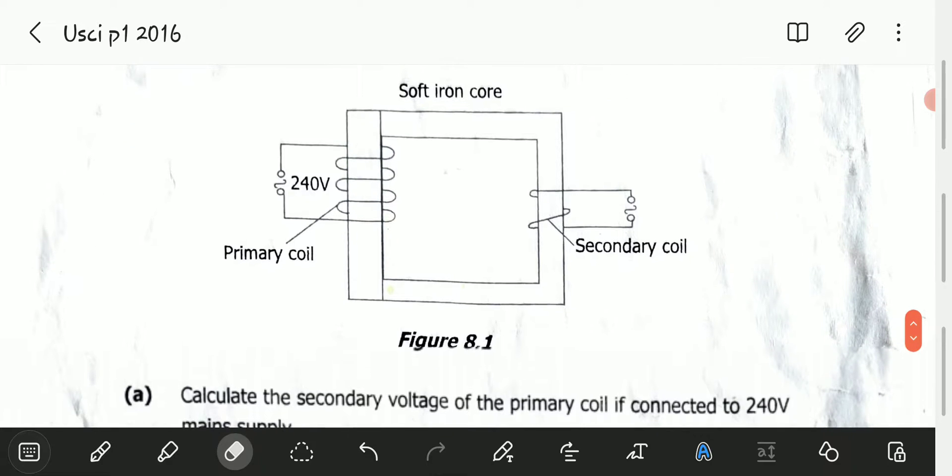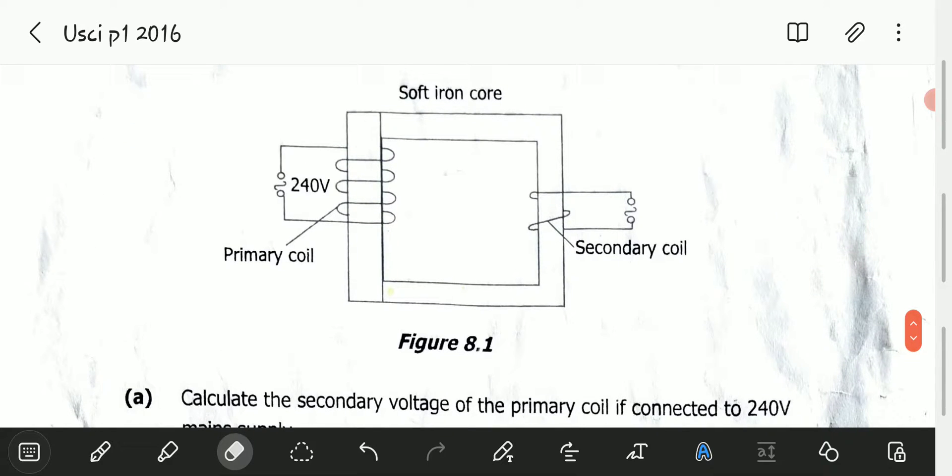In a transformer, the coil that takes in current from the mains is called the primary, and the coil that gives out current to any device to be used is called the secondary.